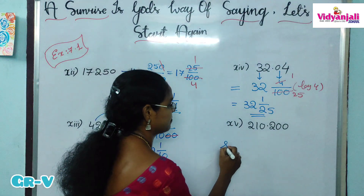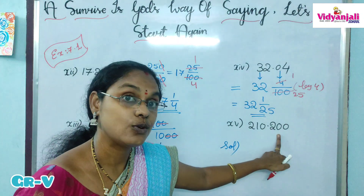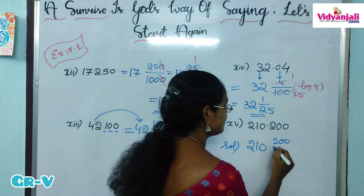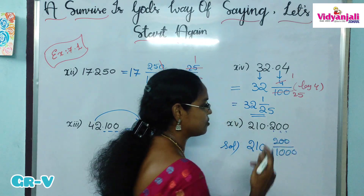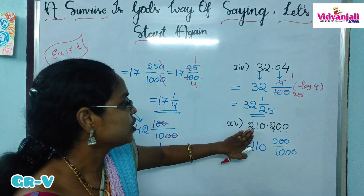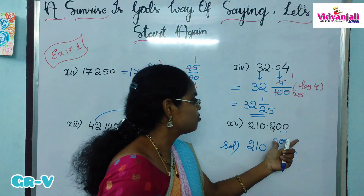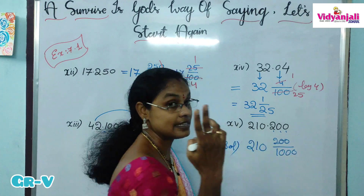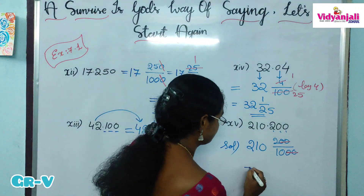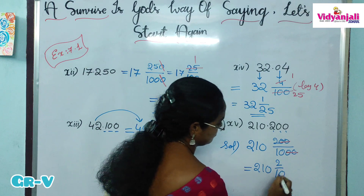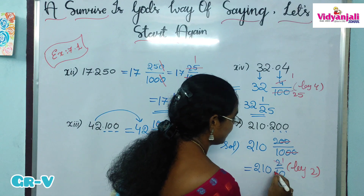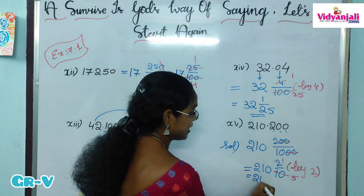The last one: 210.200. Whole part is 210, decimal part is 200, which has 3 digits, so denominator is 1 after 3 zeros: 1000. So the fractional form is 210 and 200 by 1000. In 200 and 1000, we can cancel 2 common zeros — cancelling 2 zeros means cancelled in the 100 times table — leaving 2 by 10. Then 2 and 10 cancel in the 2 times table: 2 times 1 is 2, 2 times 5 is 10. So the final answer is 210 and 1 by 5.